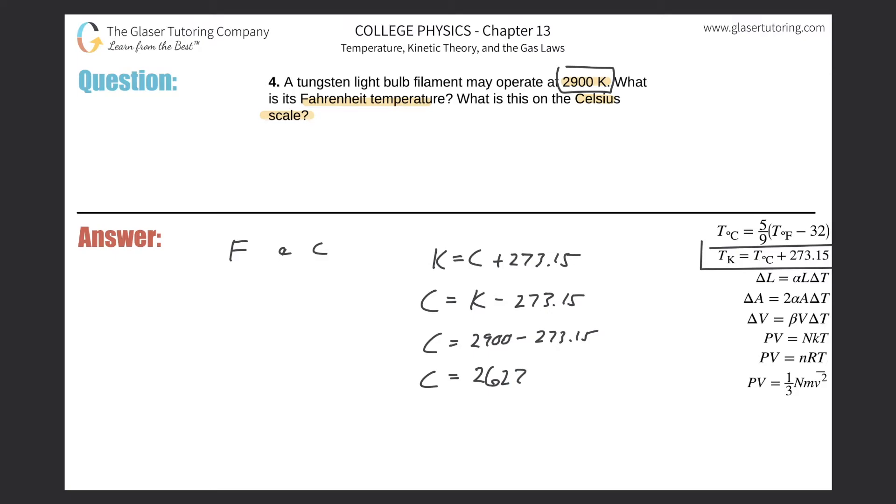And then Fahrenheit. Now it's nice that we did the Celsius first because now I have a formula that relates the Celsius temperature to the Fahrenheit. So now let me write that equation out. This says that the Celsius temperature will equal five ninths times the Fahrenheit temperature minus 32.